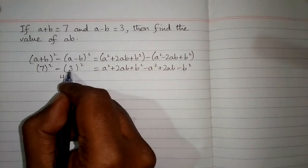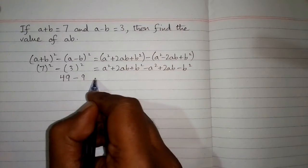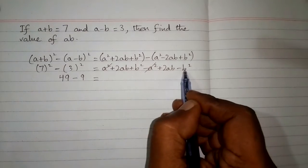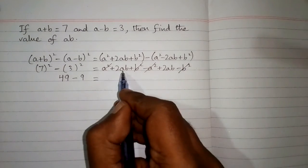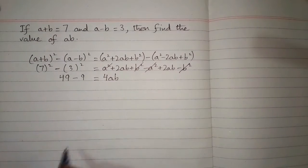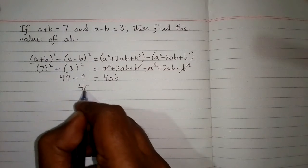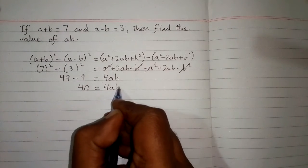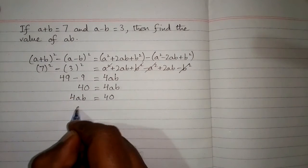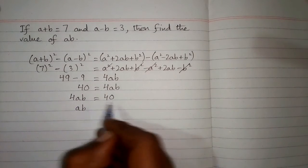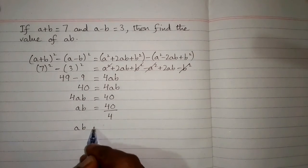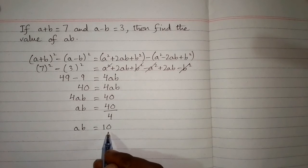Now 7 square is 49 and 3 square is 9. The a square and minus a square cancel, and b square and minus b square cancel. So 2ab plus 2ab is equal to 4ab, and 49 minus 9 is equal to 40. So 4ab equals 40, and dividing both sides by 4, the value of ab is 10.